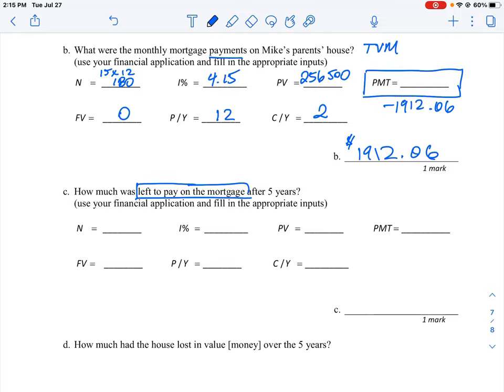If you took it to the full 15 years the future value of the loan is zero. But if we're just taking it to five years the future value of the loan will not be zero, it's still going to be a certain amount owing on it. So if we go through our values here, we're going to be looking for the future value. That's what we're trying to find. The number of payments is just going to be five times 12, which is 60 payments into the future.